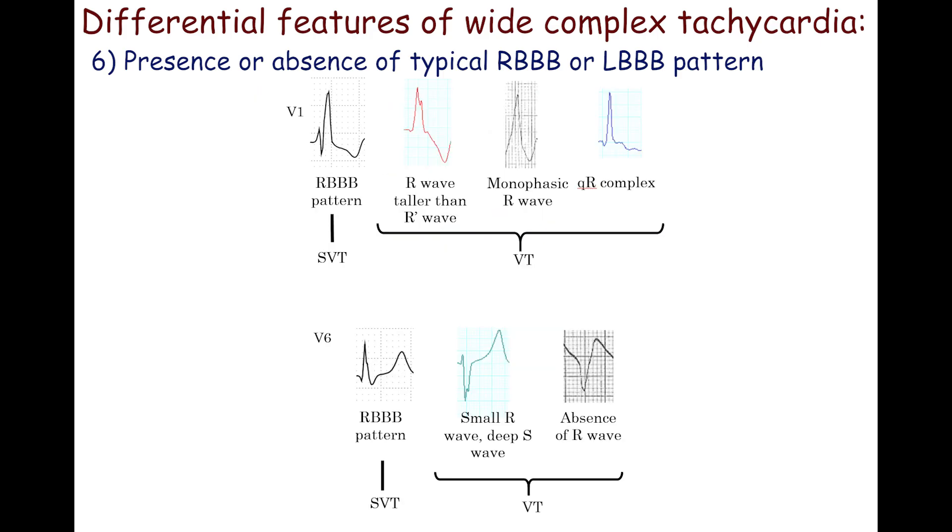Atypical patterns in the right bundle branch block morphology include: R-wave taller than R-prime wave, straight left rabbit ear in lead V1, tiny Q-wave with high R-wave in lead V1, monophasic R-wave in lead V1, absence of R-wave in lead V6 or R-wave is smaller than S-wave in lead V6.